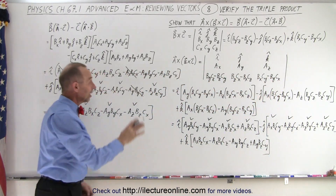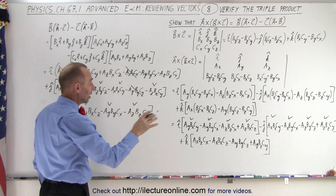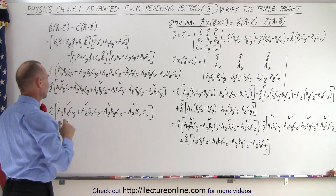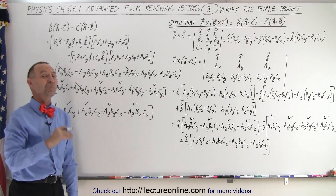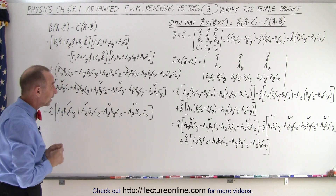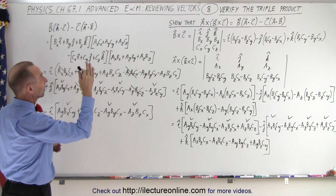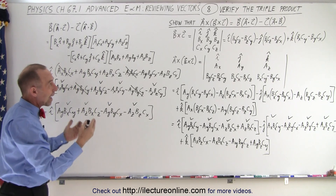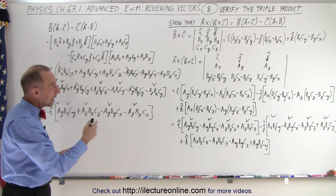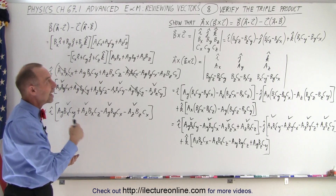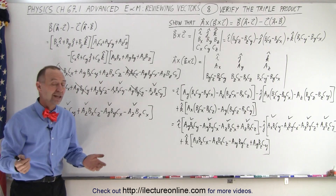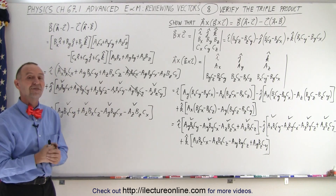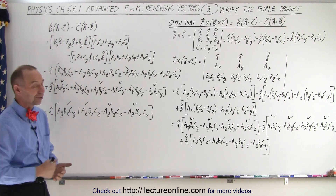We've shown that the I component is the same and the J component is the same. We can assume the Z component follows analogously. That is how we verify that A cross B cross C equals B times A dot C minus C times A dot B — the BAC-CAB rule for the vector triple product.